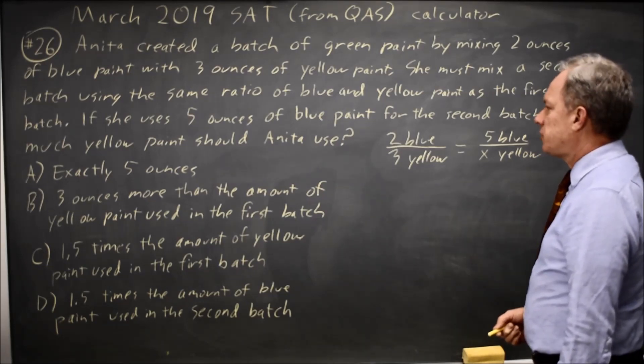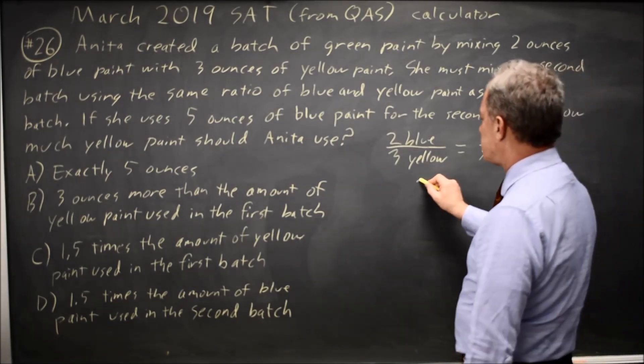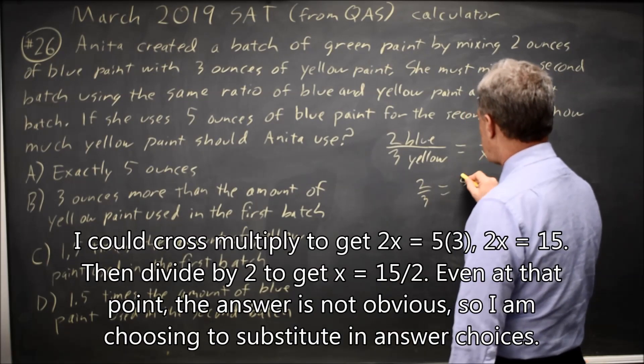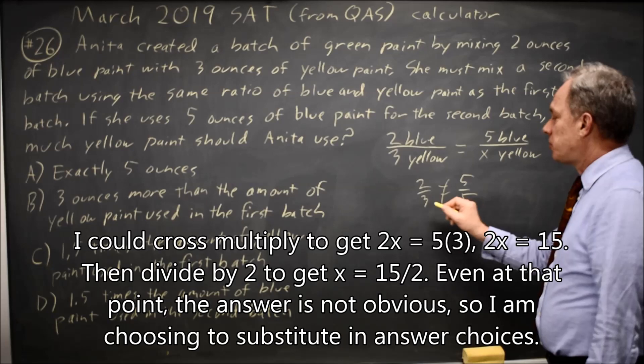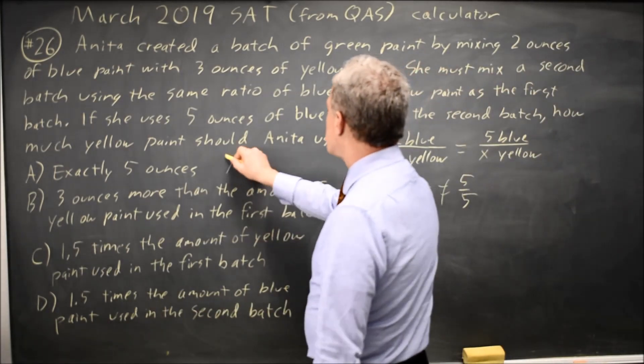Choice A would be 5 ounces. So the question is, is 2/3 equal to 5/5? And clearly that's not true because 5/5 is 1 and 2/3 is less. So choice A is wrong.